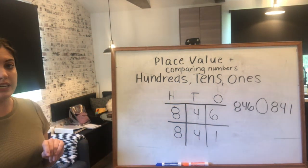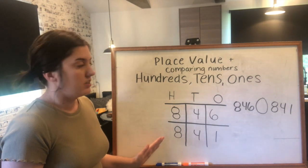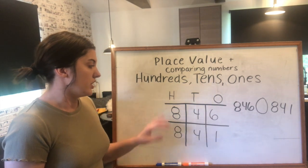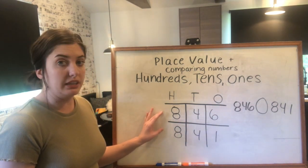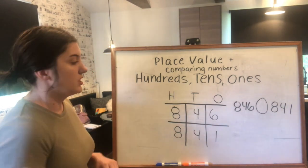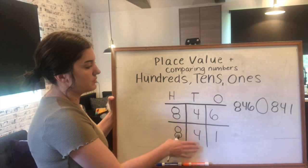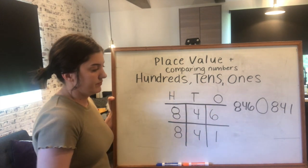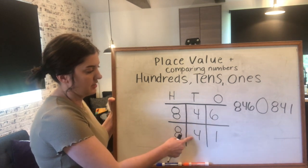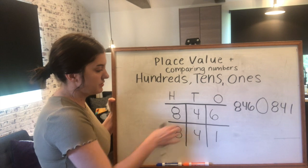Remember, we need to look at the greatest place value first — the hundreds. We have eight hundreds in 846 and eight hundreds in 841. Are they equal? Yes — eight hundreds equals eight hundreds, so we still don't know which number is bigger. Let's move to the tens place. 846 has four tens and 841 has four tens — those are also equal.